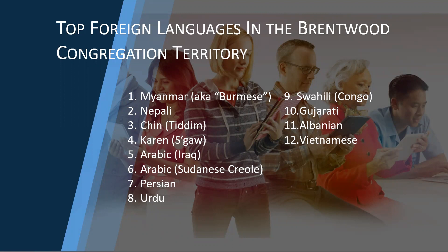For example, at the Brentwood English congregation in Nashville, Tennessee, here are the top languages encountered in the territory. When locating languages to load, note that there could be subtle varieties or dialects within each major language group. For instance, there are several dialects for Arabic shown in parentheses, so make sure you understand which ones really apply to your territory.